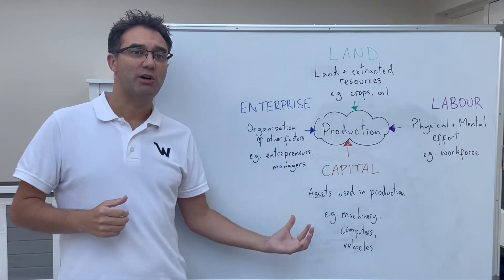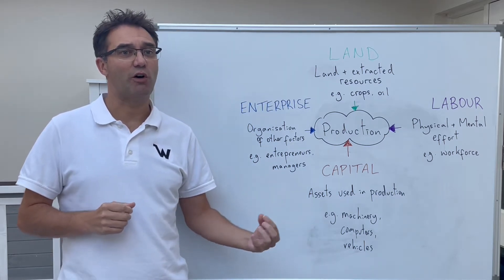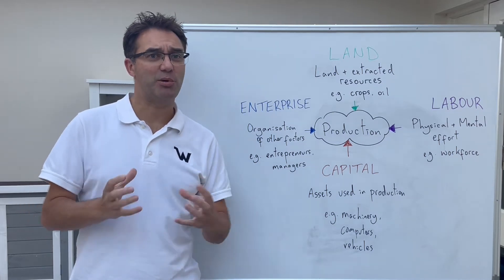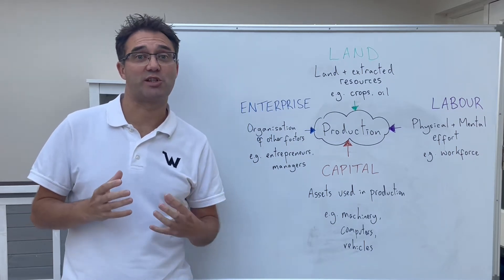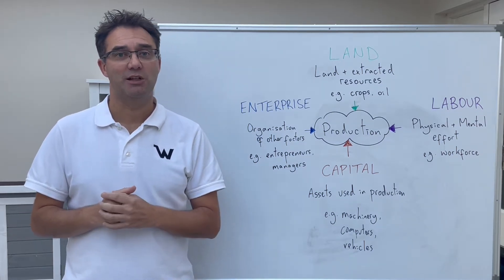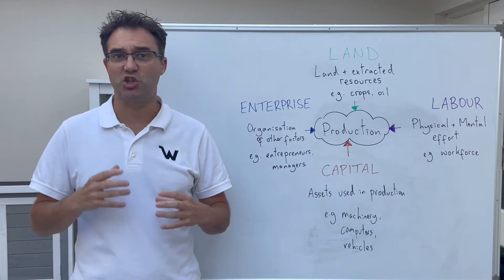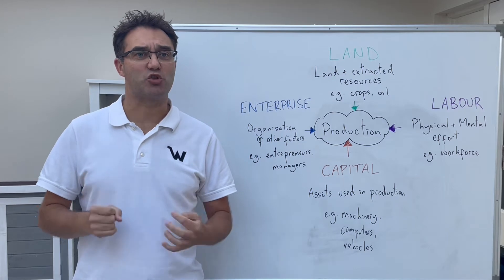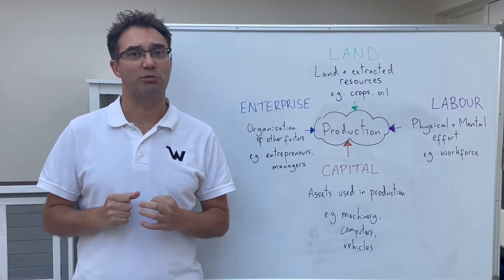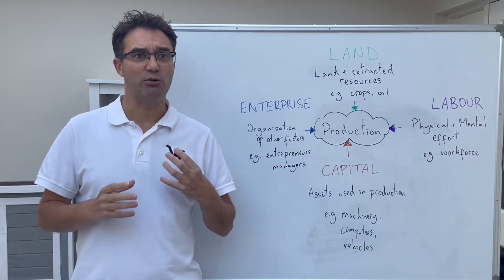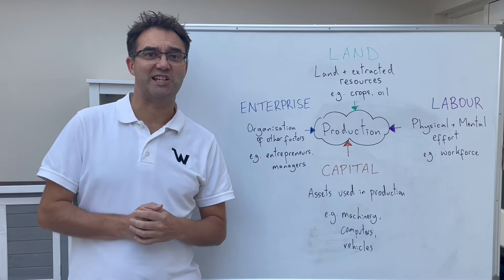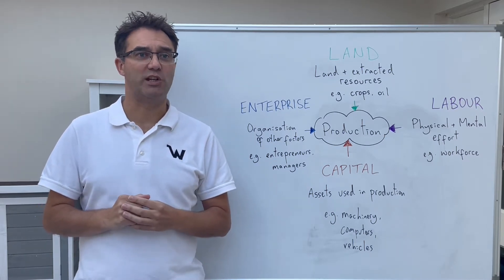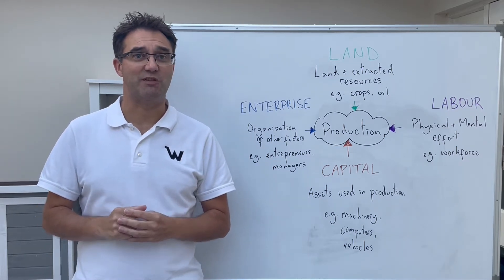Capital is the human-made assets that are involved in or assist in the production process, but they aren't used up in that process like the land resources can be. Examples of this are machinery, tools, vehicles, and buildings, as well as the infrastructure of the economy such as road and rail, phone and broadband, and utility networks. Economists say that this factor is rewarded by the payment of interest.